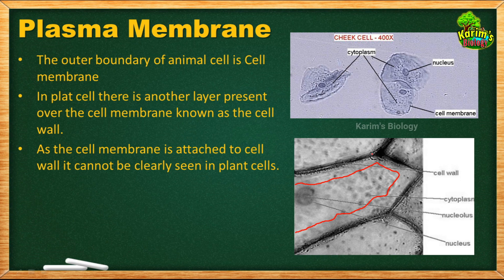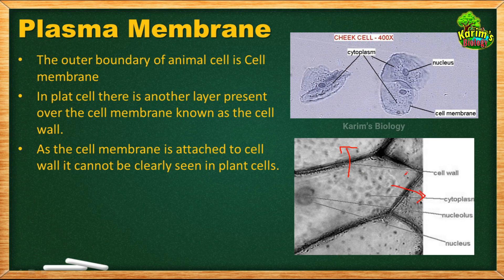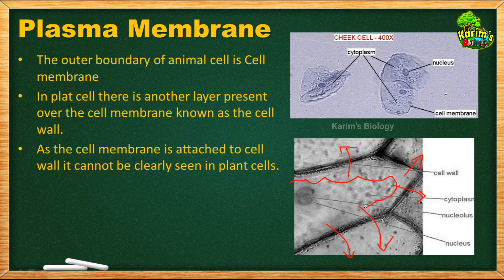How can we separate the cell membrane from the cell wall? There is a simple technique called plasmolysis. Plasmolysis is a physiological process in which water from the cytoplasm comes out of the cell. The rigidity of the cell keeps the cell membrane attached to the cell wall. If you make the cell flaccid — that means if you remove some water from the cytoplasm — the cytoplasm shrinks and the cell membrane gets separated from the cell wall.